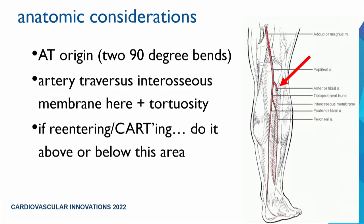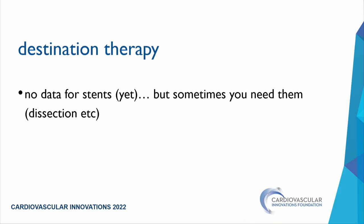The AT 90-degree bend is also an area where the media is weak as the artery passes through the interosseous membrane. Be careful there with all maneuvers. If considering CART or reverse CART, try to do it away from that bend, as it is susceptible to rupture which can cause compartment syndrome.